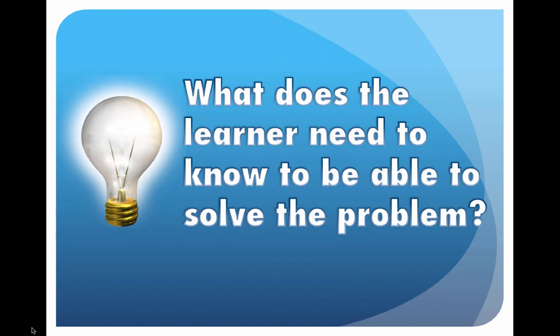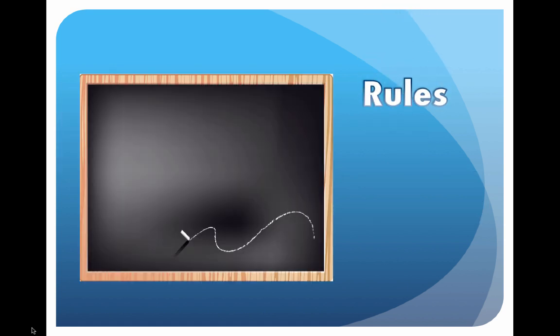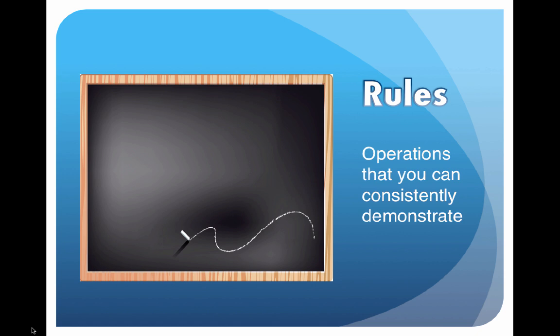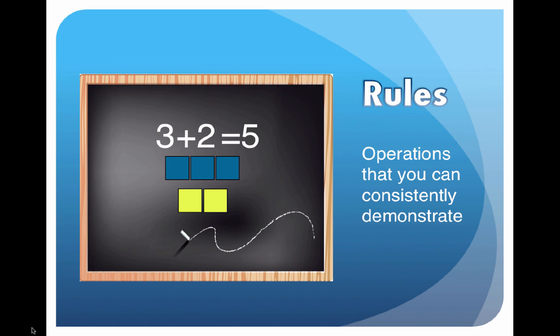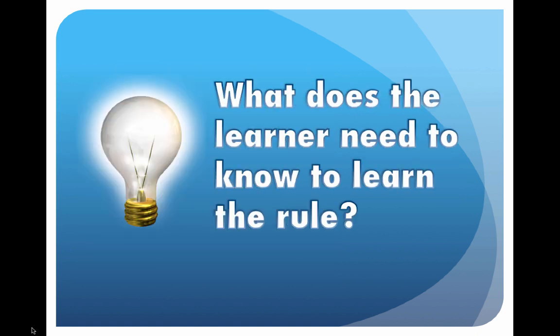You must ask yourself: what does the learner need to know to be able to solve the problem? The rules come next — these are operations that you can consistently demonstrate. For example, 3 plus 2 is always equal to 5. Once you learn how to add single-digit numbers, you should be able to do this with all single-digit numbers. Next, you ask: what does the learner need to know to be able to learn the rule?